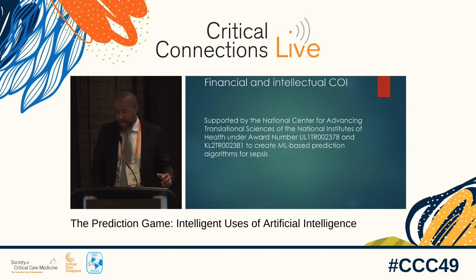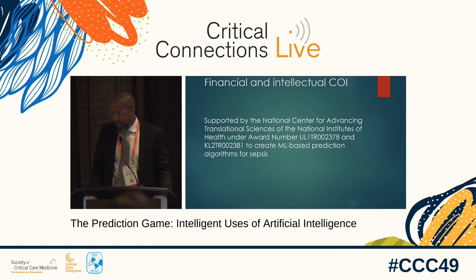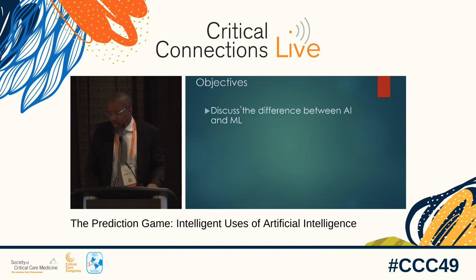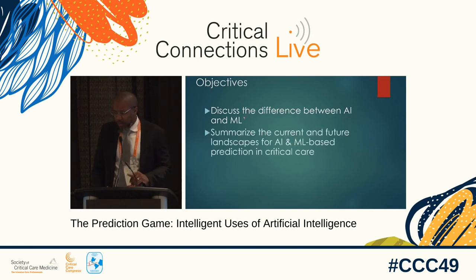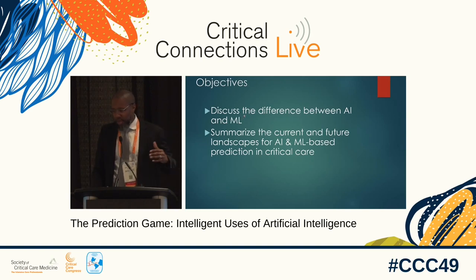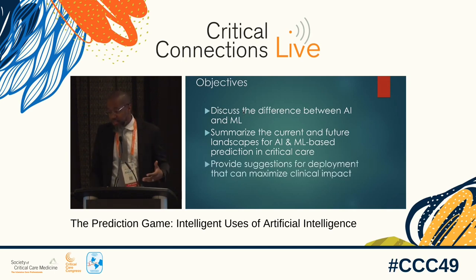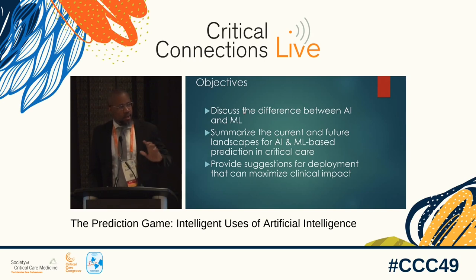I have some funding to create machine learning-based prediction algorithms for sepsis. However, any of the companies or devices that I mention, I do not get any reimbursement or funding to promote them — they are simply mentioned for the purpose of science. My objectives here are threefold: I'm going to discuss the differences between AI and machine learning, summarize the current and future landscape of AI and machine-based prediction in critical illness, and provide some suggestions for how we can better deploy these things to maximize clinical benefit.